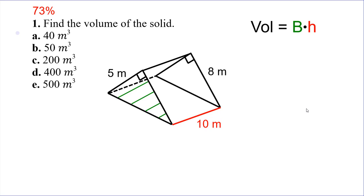Number one. This should have been really easy but surprisingly quite a lot of you missed this, so when you see what you did wrong you're going to feel really silly. Our formula for volume is we find the area of the base times the height. First we have to identify the base. On this one the base is not going to be the rectangle on the bottom. What we're looking for is a face that is not a rectangle, because all lateral surfaces are either curved like on a cylinder, or they're all rectangles. In this case we have three rectangles going around our triangular bases — this is a triangular prism.